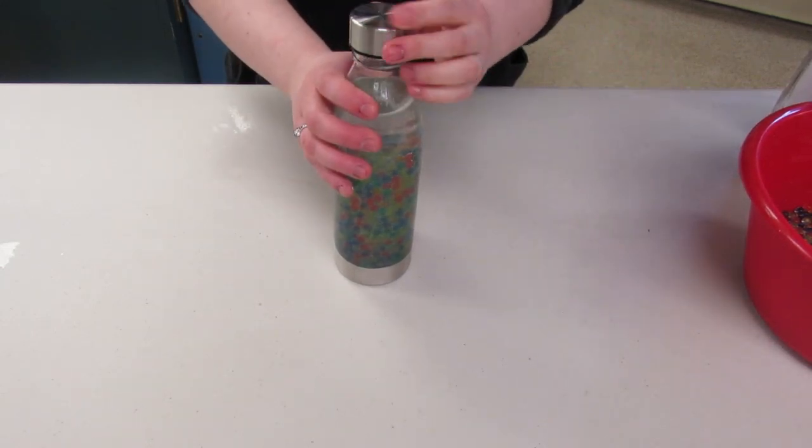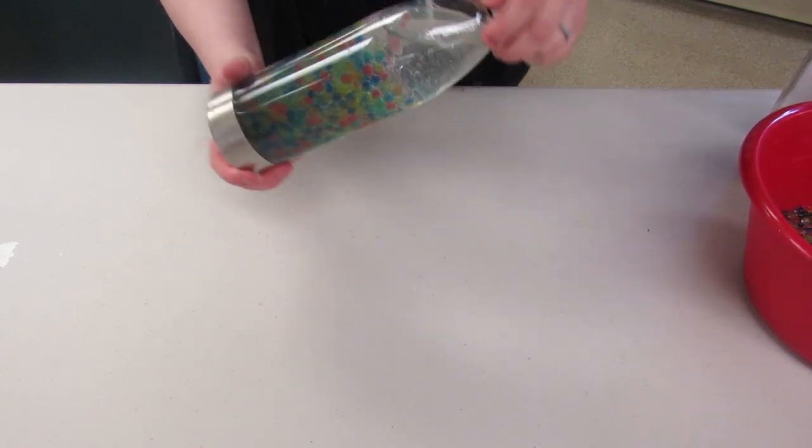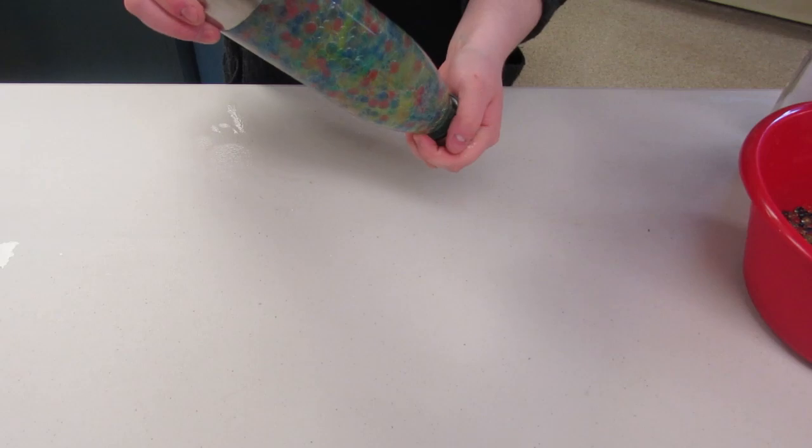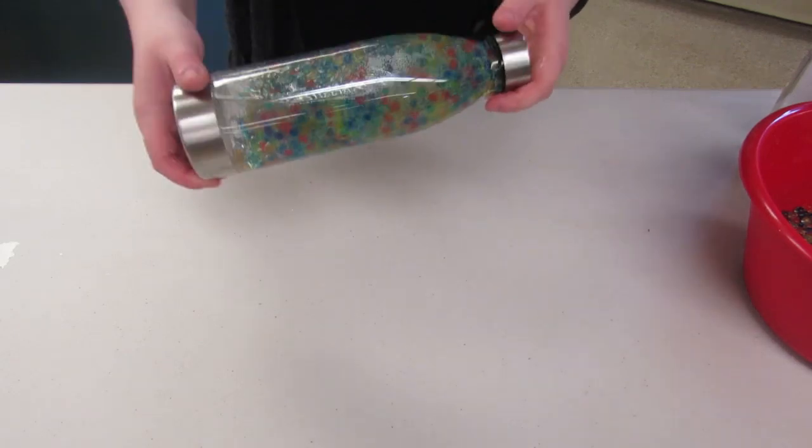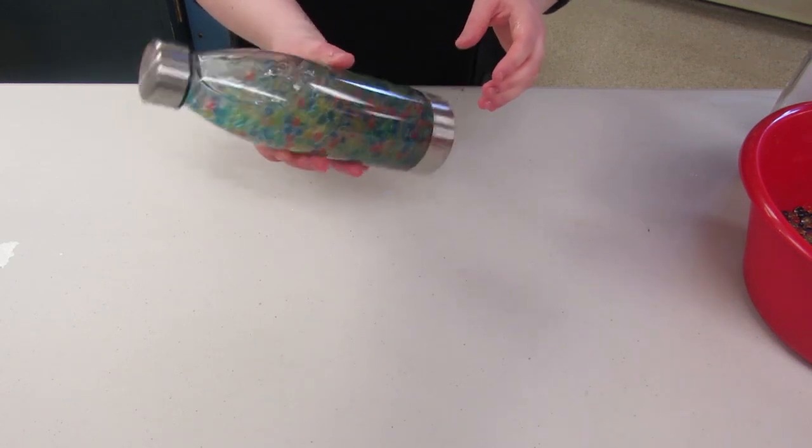Now you're going to take your cap and just go ahead and cap it. One thing that you can do is add a little bit of hot glue so that the cap stays on better, but I decided that the seal was good enough. Now you have a super cool sensory bottle. Check that out.